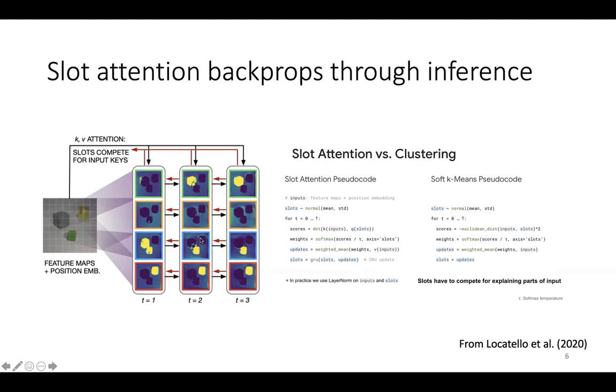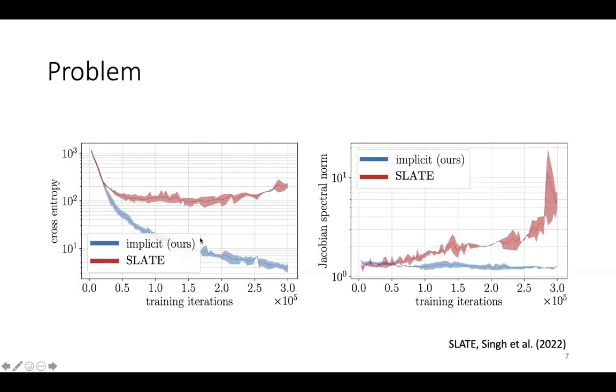To train vanilla slot attention, we back-propagate gradients through the entire refinement procedure. However, this leaves difficulty in optimization, as we can see in the uncontrolled growth of the Jacobian spectral norm of the slot attention cell of Slate from Sing et al. 2022, which you can see in red. In contrast, our method in blue trains much more stably.